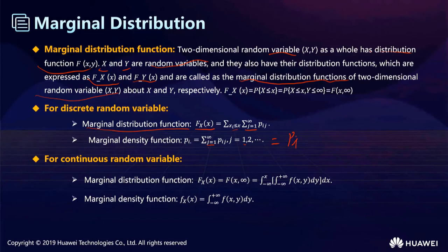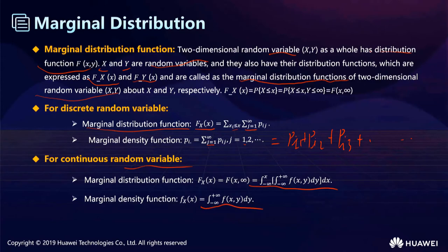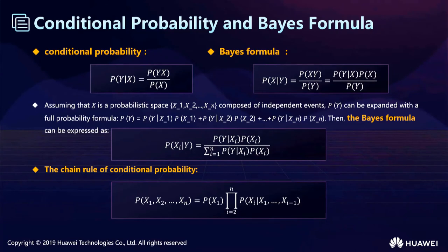For discrete variables, the marginal distribution is computed by summing: for p_i, sum over j from 1 to the total number of columns, getting the row totals. For continuous variables, instead of summing, we integrate — calculating the area under the joint density. After we finish studying distributions and joint density, let's introduce a new concept: conditional probability.